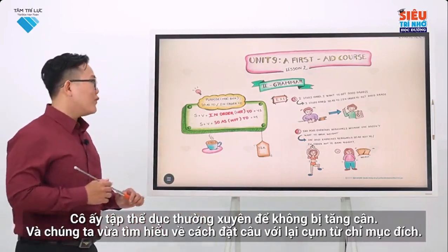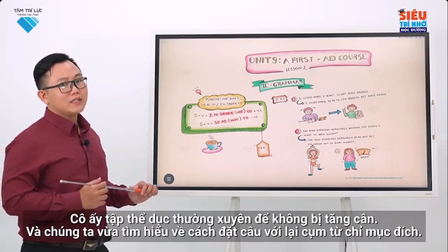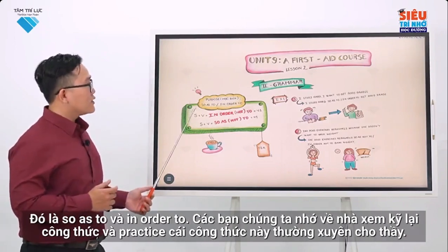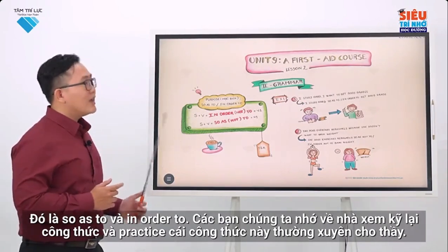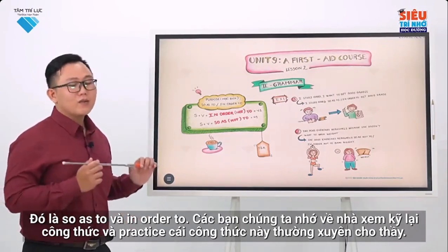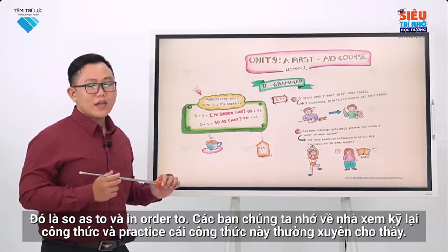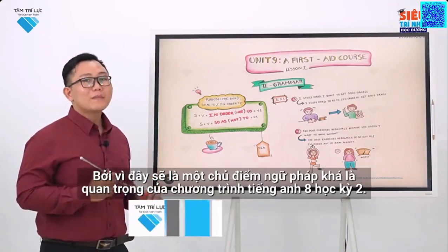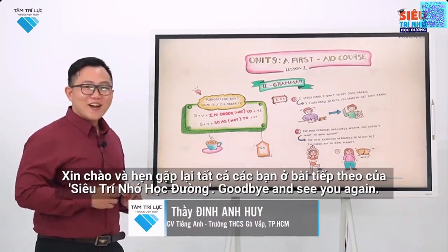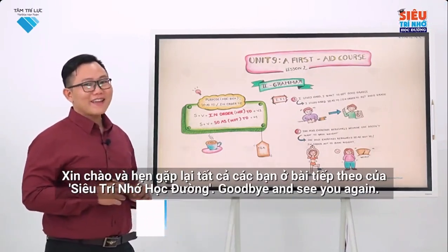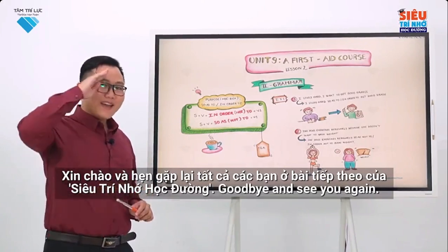So we have just learned about how to make sentences with the phrases of purpose — 'so as to' and 'in order to.' Remember to reread the structure at home and practice regularly, because this will be important grammar in 8th grade English, Semester 2. Goodbye and see you all in the next lesson of the Super Memory for Schools program.